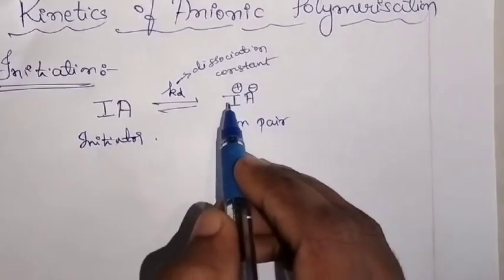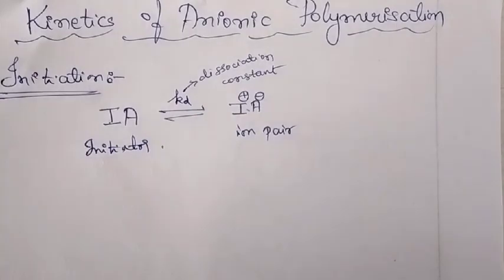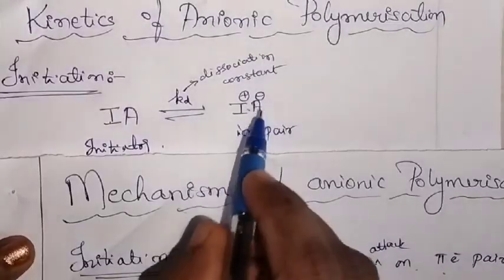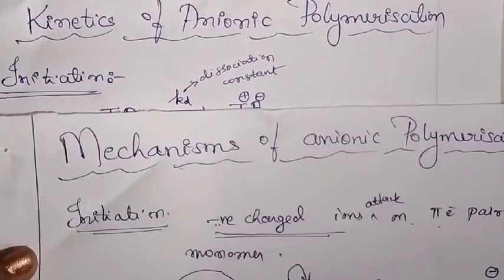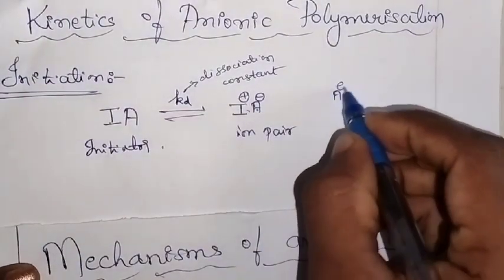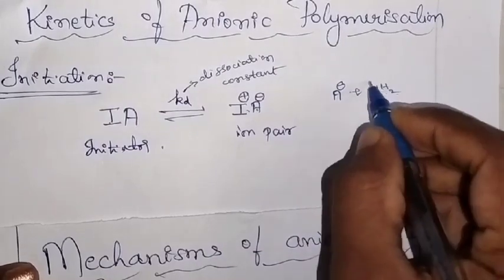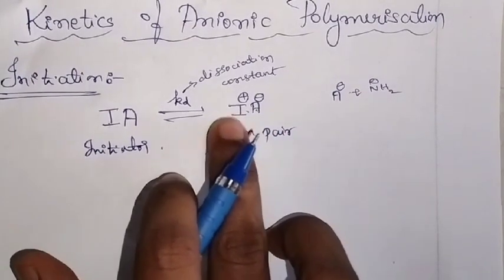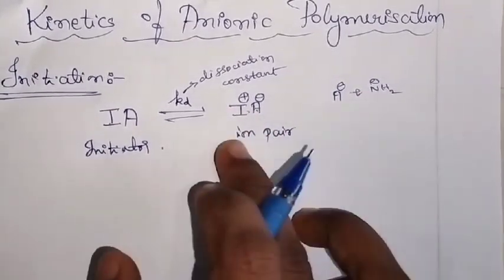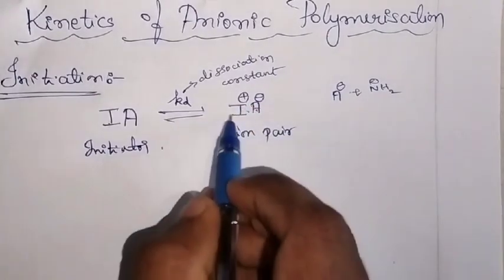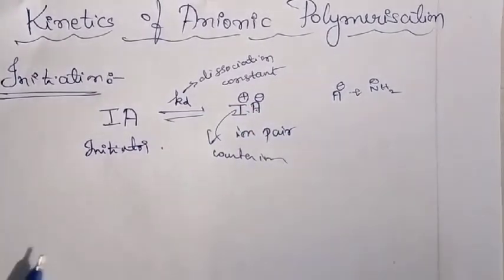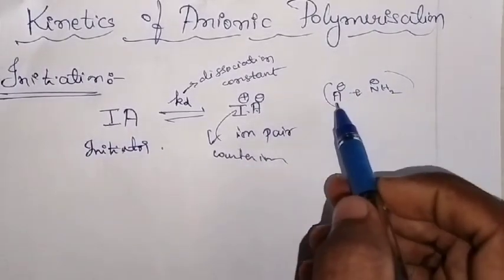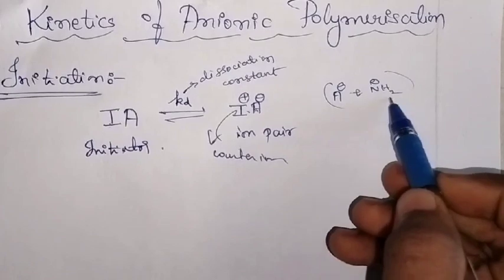Now, comparing this to my catalyst — the catalyst I have taken is NH₂⁻. So this A⁻ represents my NH₂⁻. A⁻ is representing my NH₂ negative. What is I⁺? I⁺ is the counterpart that is present along with the anion — it is the counter ion.